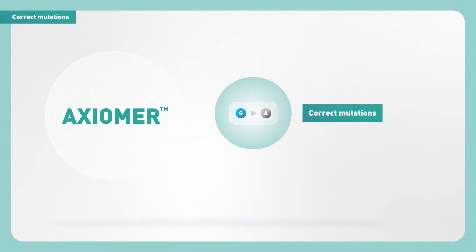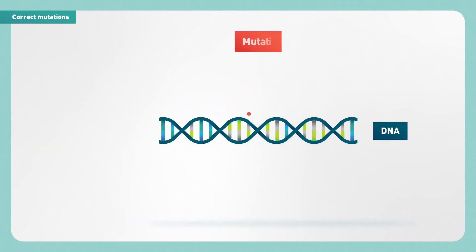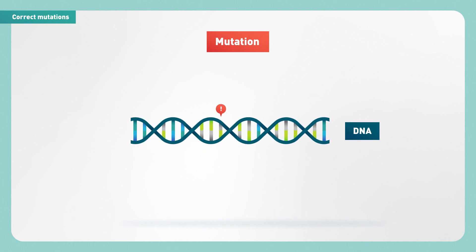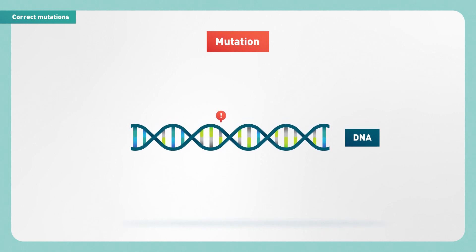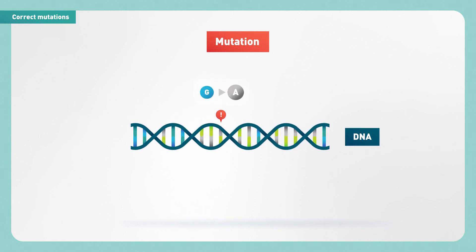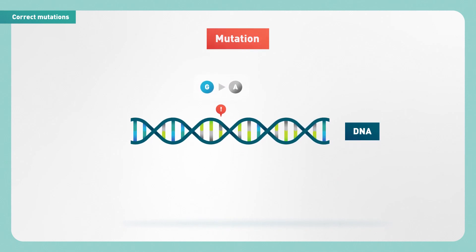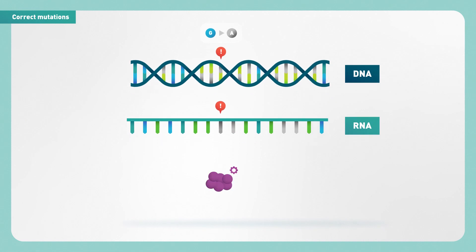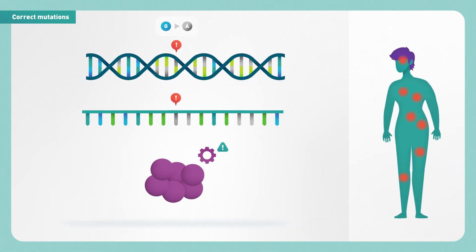One way of using Axiomer is to correct G to A mutations. Mutations are mistakes in the information contained in the DNA. Some mutations are caused by a single nucleotide change, for example, when a G is replaced by an A. When information from the DNA is copied into the RNA, this mistake is included as well. This can have a negative impact on the protein and lead to a disease.